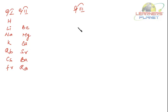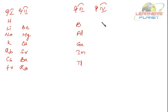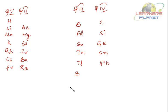Group 3 elements are boron, aluminium, gallium, indium, and thallium. Group 4 elements are carbon, silicon, germanium, tin, and lead. The valency of group 3 elements is 3, meaning they have 3 valence electrons. Group 4 elements have a valency of 4.